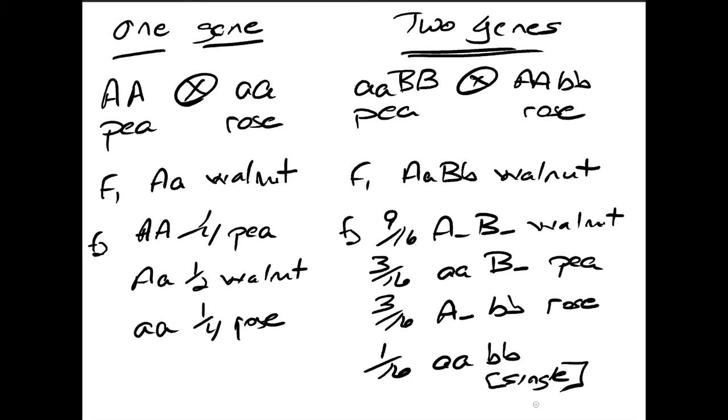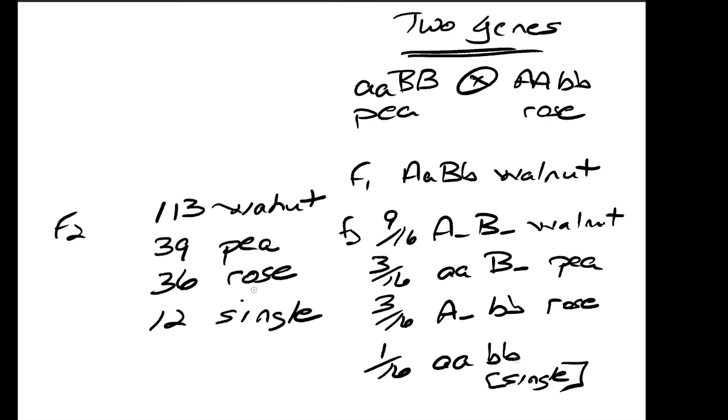Here is the most likely scenario. It is two genes, with P homozygous recessive for one and homozygous dominant for the other. Rose is homozygous dominant for one and homozygous recessive for the other. Walnut has one dominant allele for each gene, and single is homozygous recessive for both. This fits the ratio.